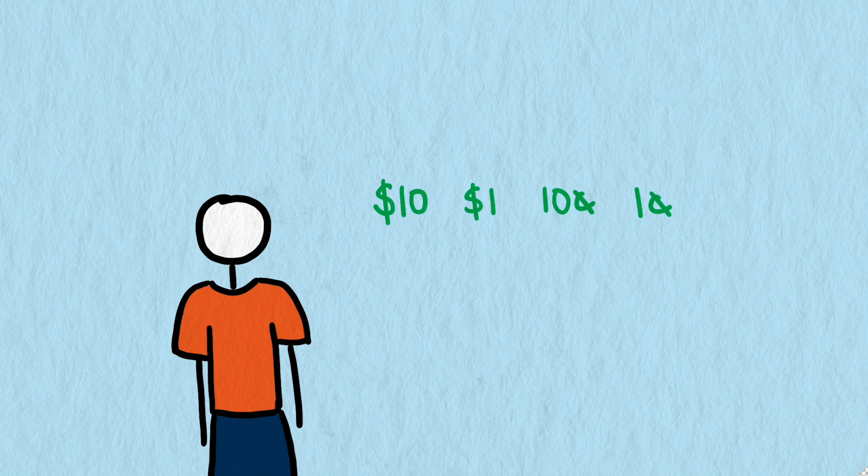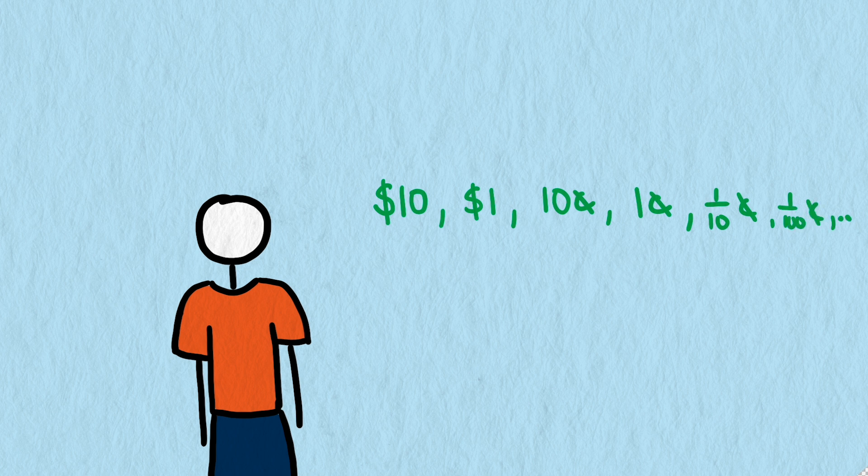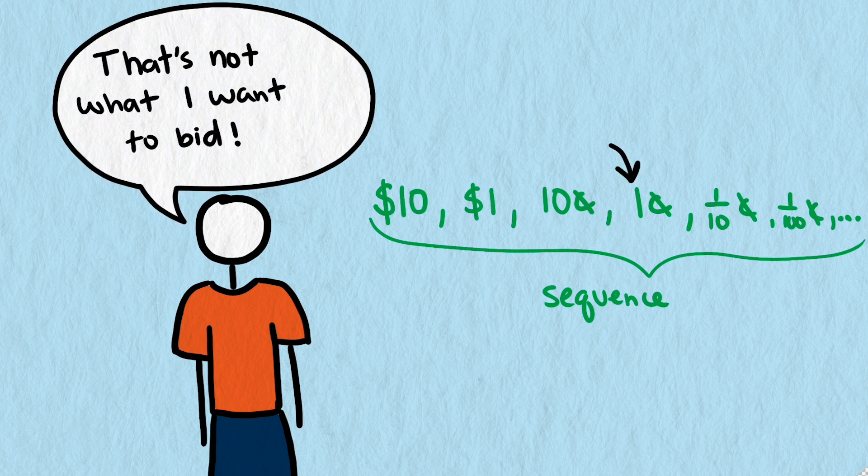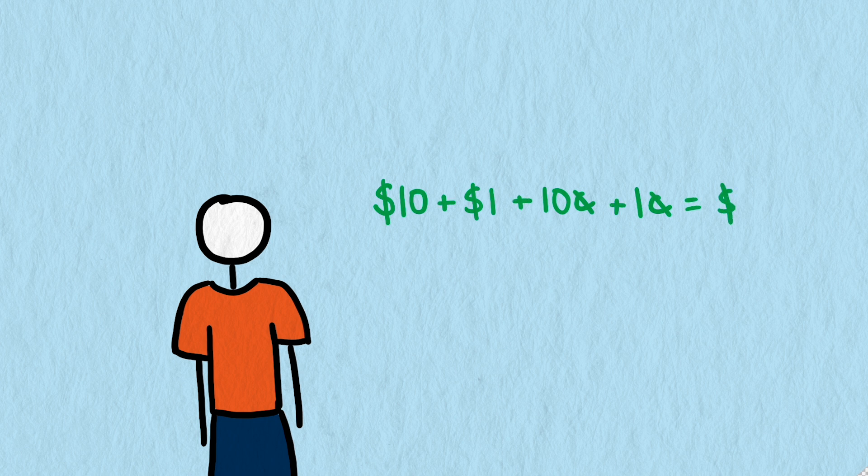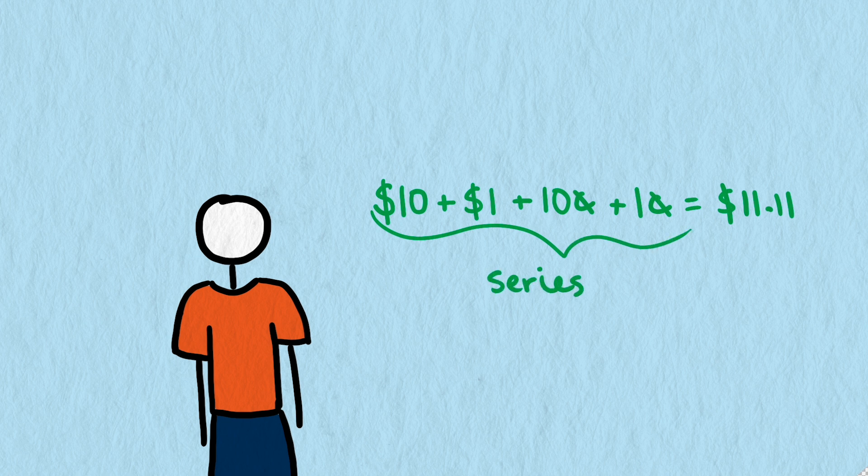In the process of figuring out the final bid, one of my kids started with $10, then $1, then 10 cents, then one penny, and he could have kept going. This is the first sequence in the problem. But my kid wasn't trying to sneak up on a value less than a penny. He was trying to reach a value that is the sum of the sequence. This is what mathematicians call a series. A series is the sum of a sequence.